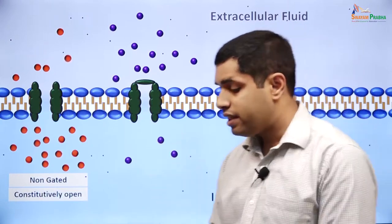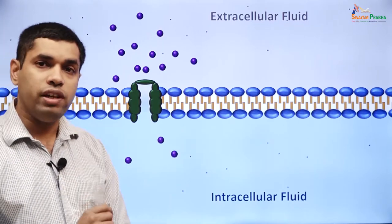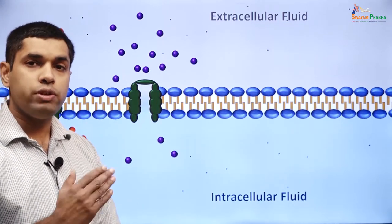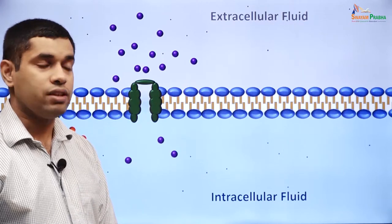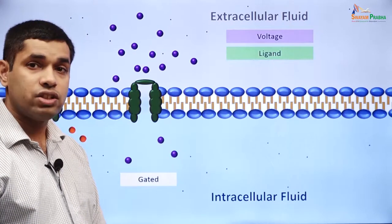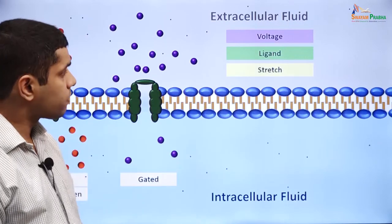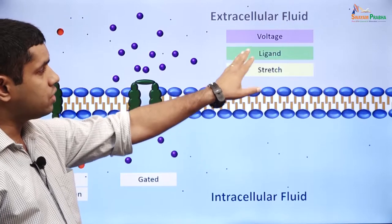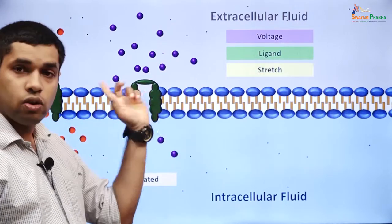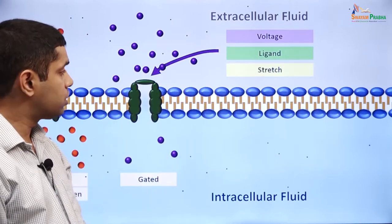On the other hand, gated channels have a gate that regulates ion flow through them. Depending on what opens or closes the gate, we could have voltage-gated channels, ligand-gated channels, or stretch-activated channels. In each of these cases, voltage, a ligand, or stretch will cause opening or closing of the gate, thereby affecting ion movements through the channel.